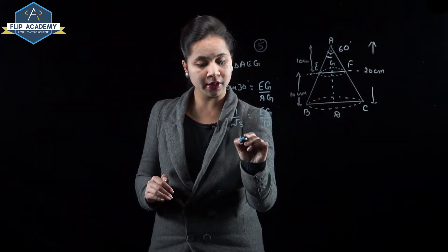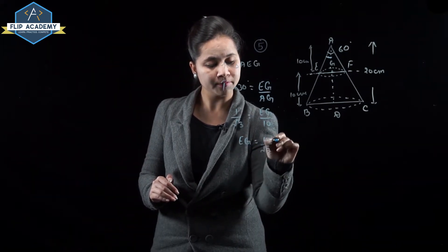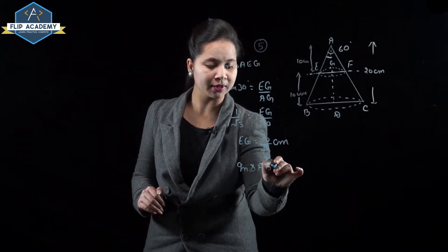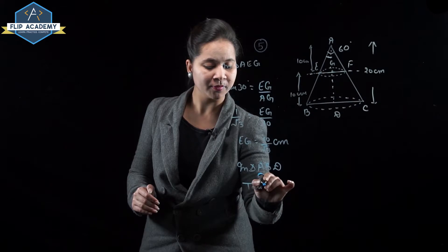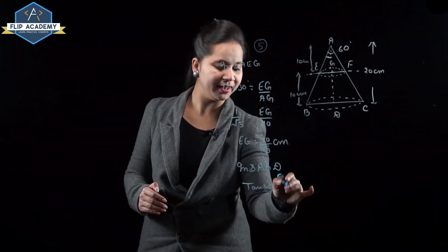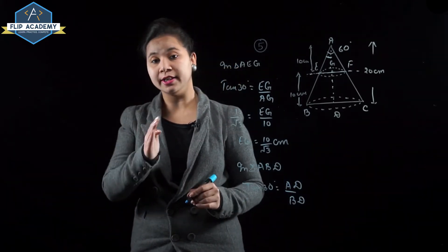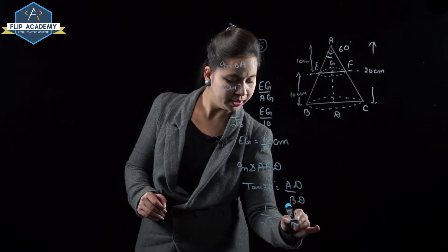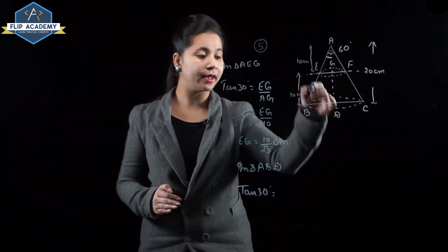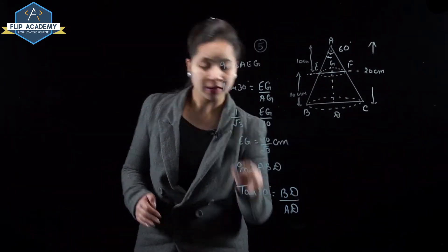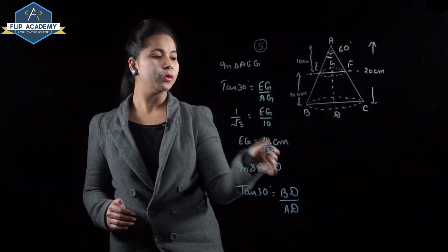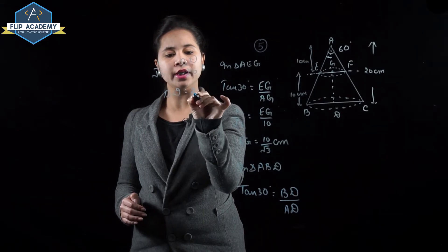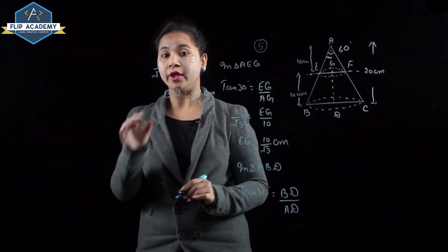So EG equals 10 upon root 3 centimeter. Now in triangle ABD, tan 30 degree equals perpendicular BD upon base AD, so 1 upon root 3 equals BD upon AD. With AD equal to 20, BD equals 20 upon root 3 centimeter. So radius of upper portion R1 equals 10 upon root 3 centimeter, and radius of lower section R2 equals 20 upon root 3 centimeter.